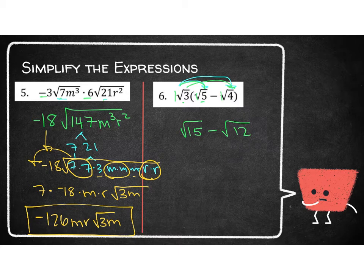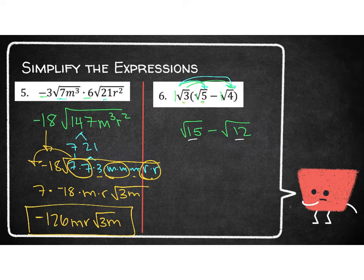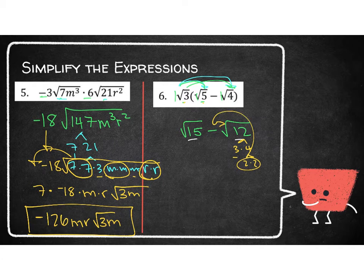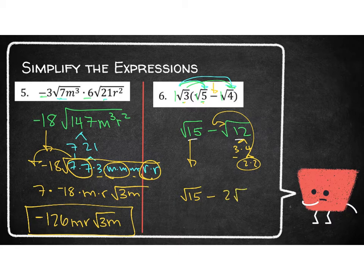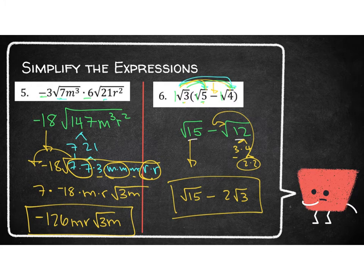Think back to the previous lesson on adding and subtracting radicals — we can only add and subtract like radicals. 15 and 12 are not like radicals, so I can't put those together and will leave them separate. However, I can simplify each one individually. 15 can't be broken down — it's just 3 times 5, already prime. But 12 is 3 times 4, and 4 is a 2 and a 2 — that pair can come out front, leaving a 3 underneath. So the result is the square root of 15 minus 2 times the square root of 3.